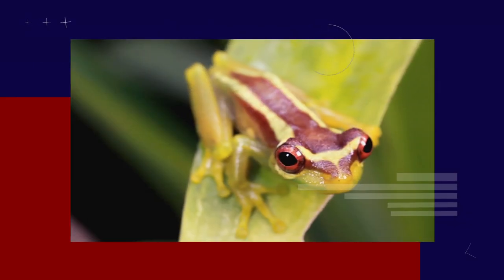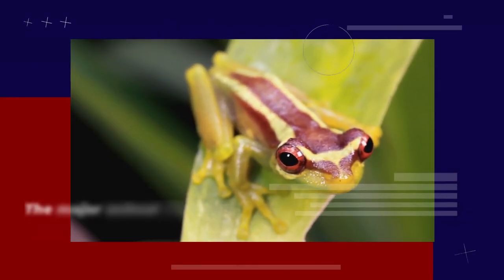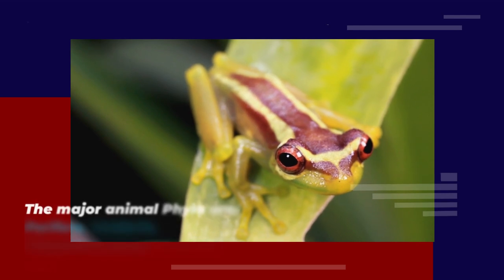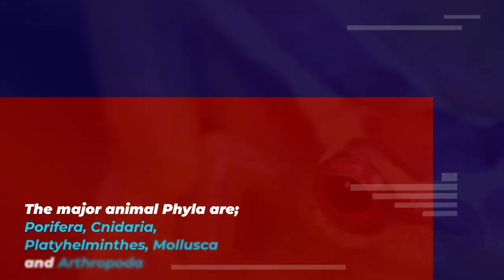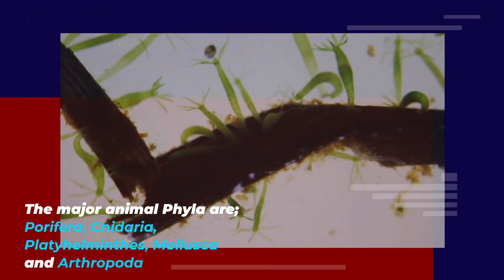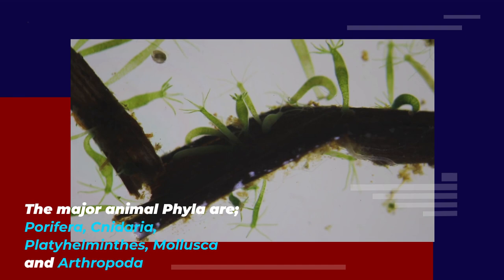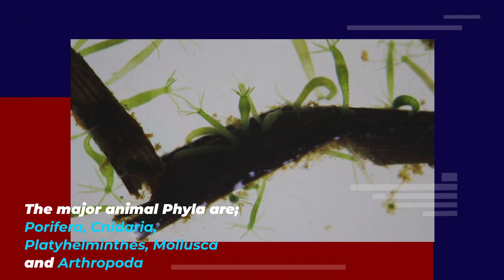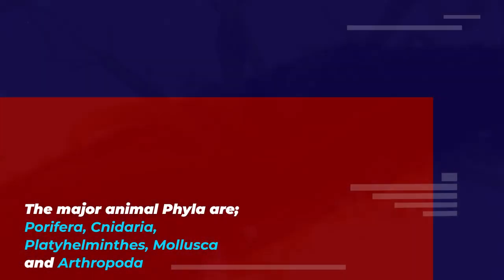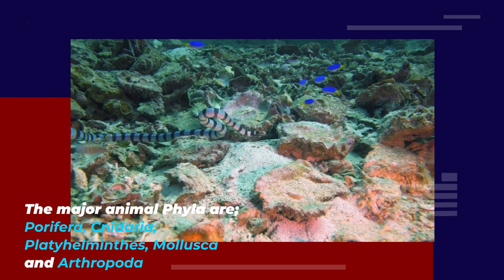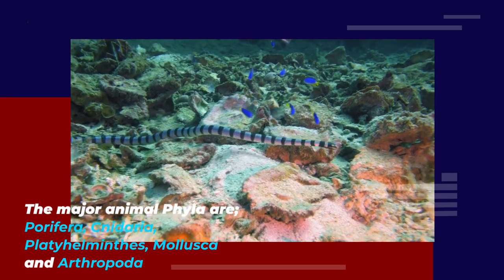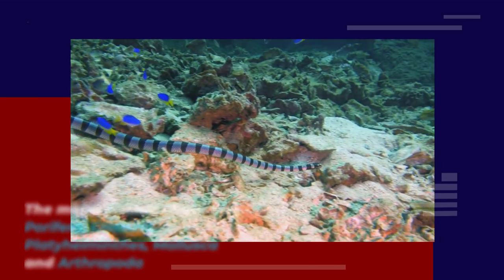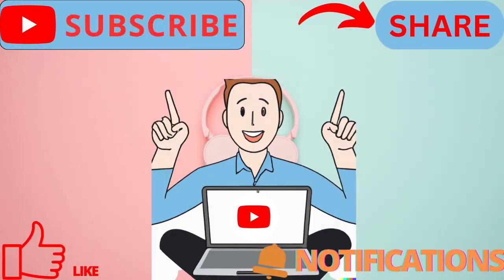In conclusion, the major animal phyla are Porifera, Cnidaria, Platyhelminthes, Mollusca, and Arthropoda. Understanding these phyla is important because it helps us better understand the diversity of the animal kingdom and the evolution of different animal groups. Thank you for watching part two of our exploring the animal kingdom: a beginner's guide series — don't forget to subscribe for more videos.